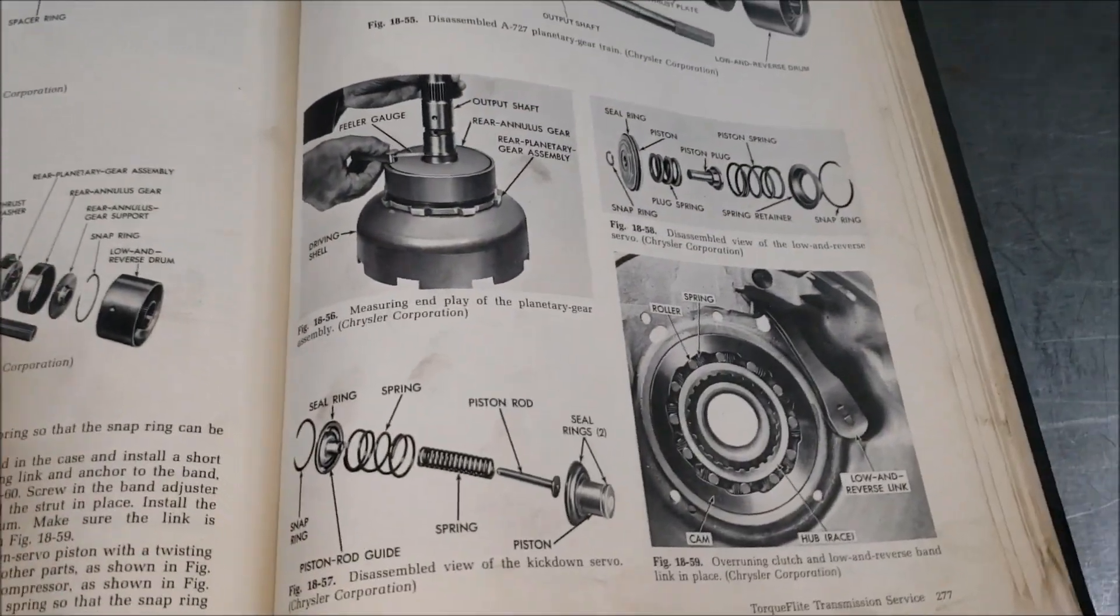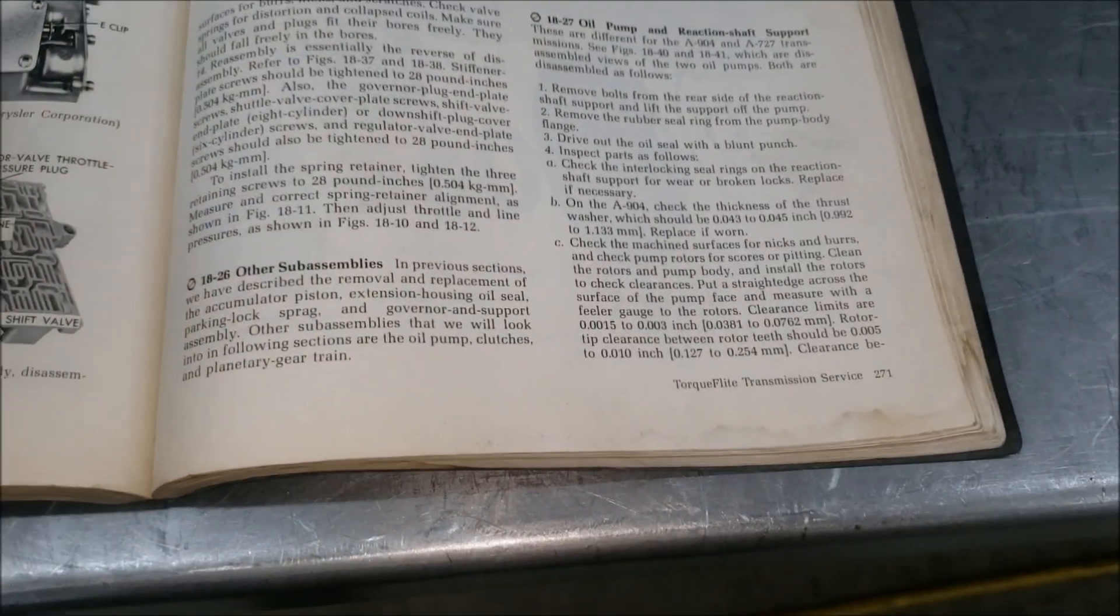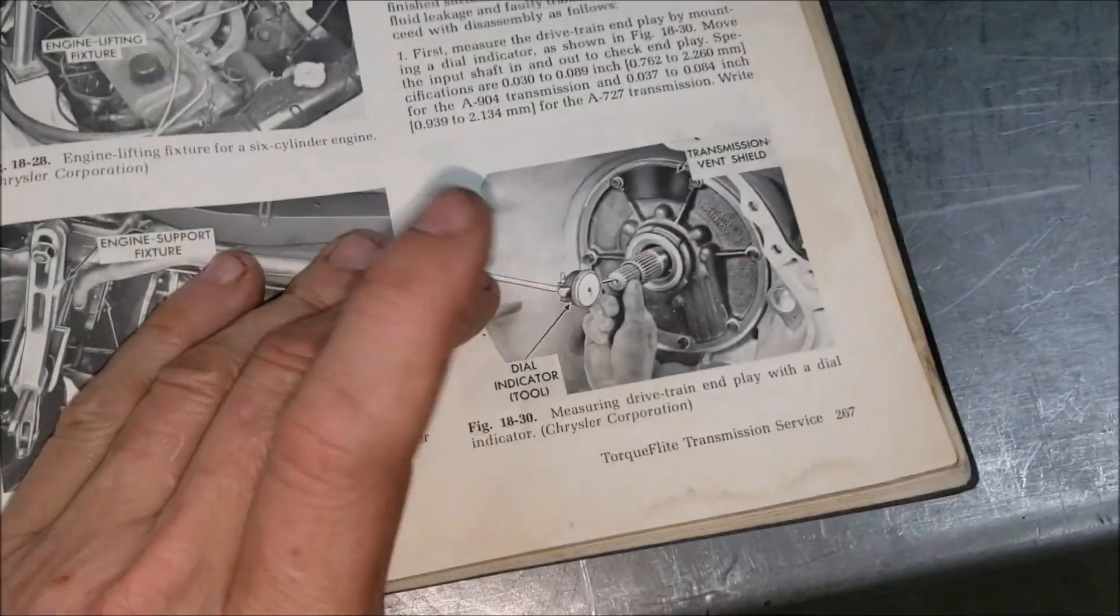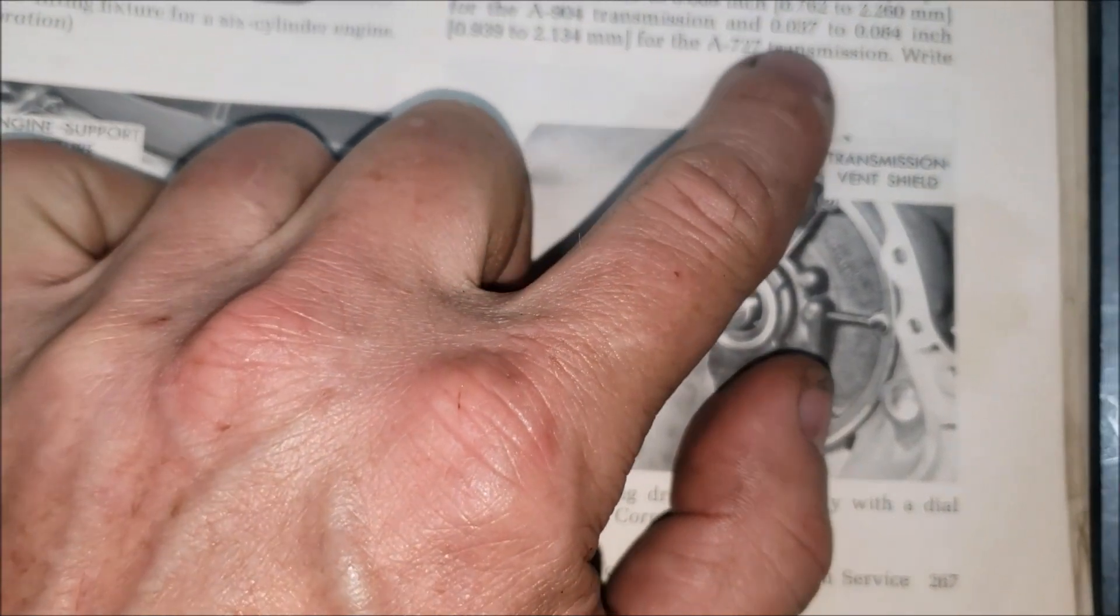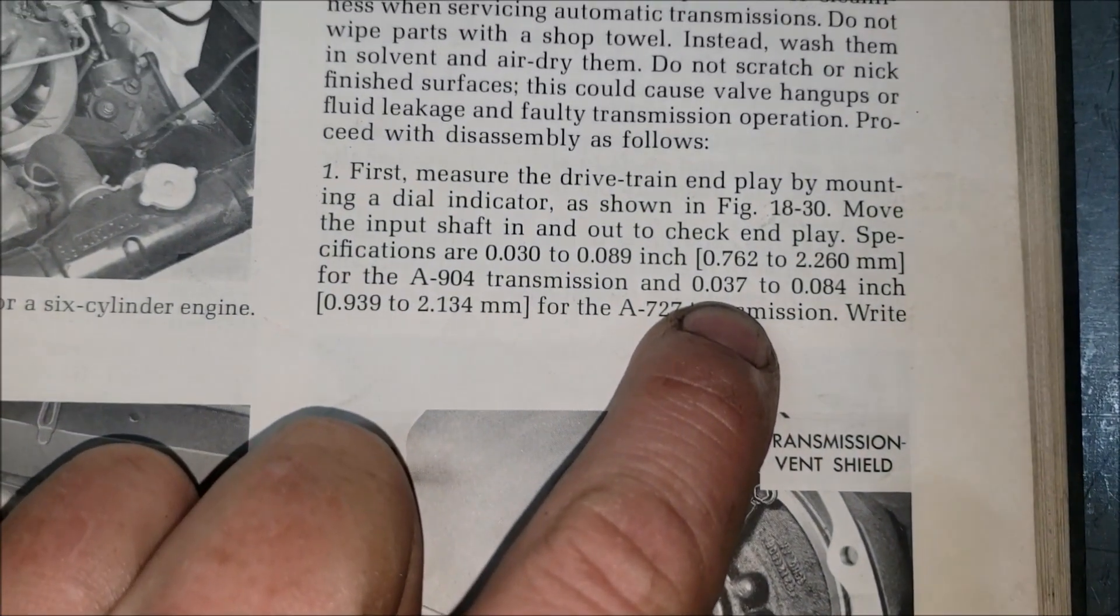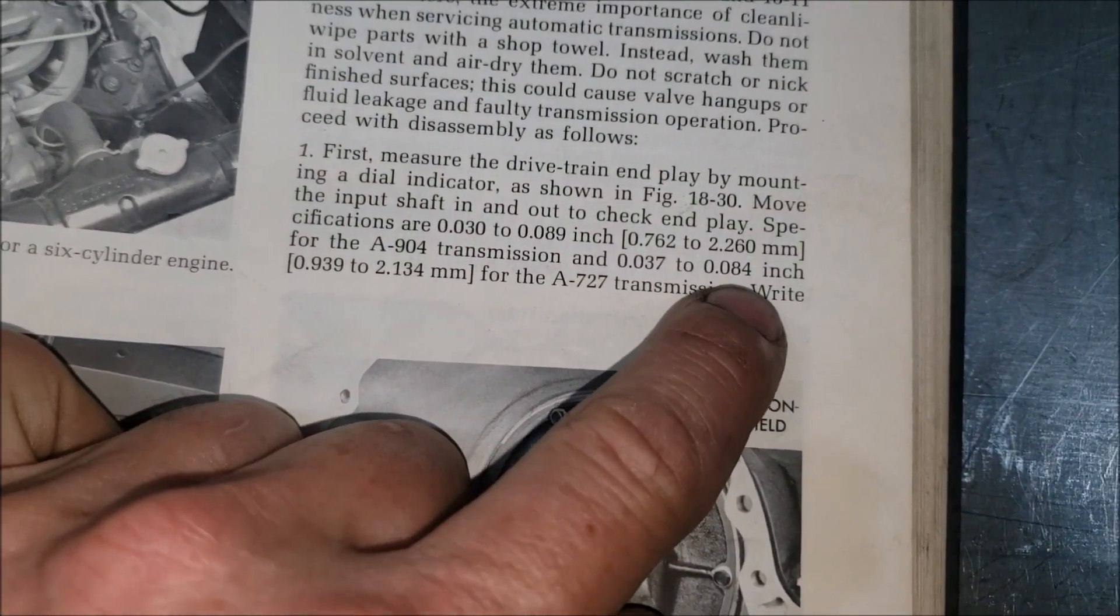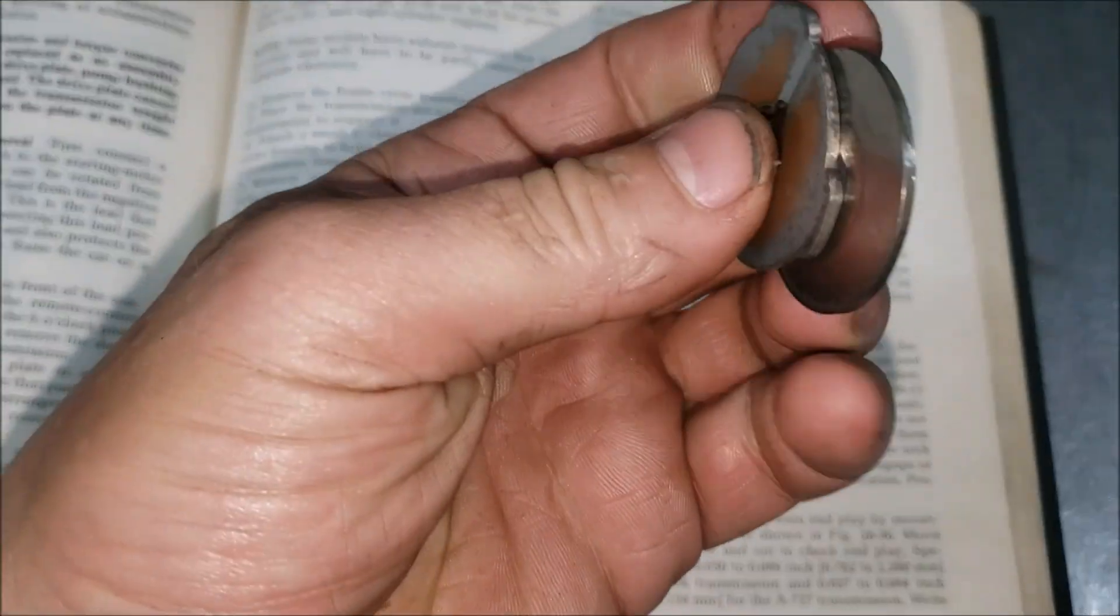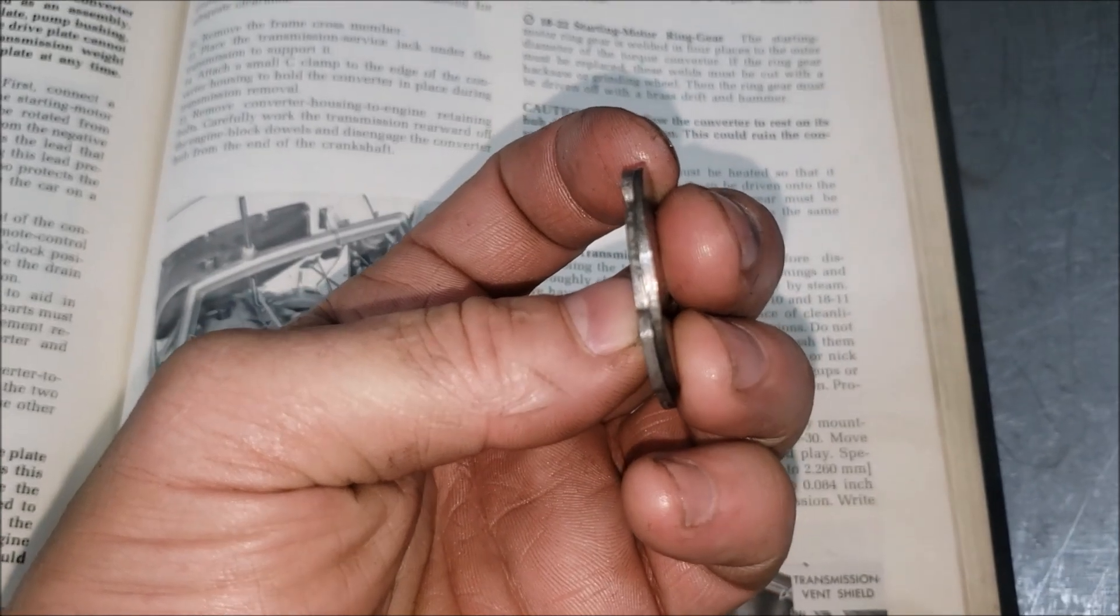It shows here in the old school book. I love these things because I just like books better than the computer for some reason. Call me old school. They tell you end play here 904 should be between 37 to 84 thousandths. I'm on the very end of that. I'd rather be kind of in the middle. This right here is definitely much thicker. We'll measure, we'll take it apart and we'll measure it up and we'll see where we're at.